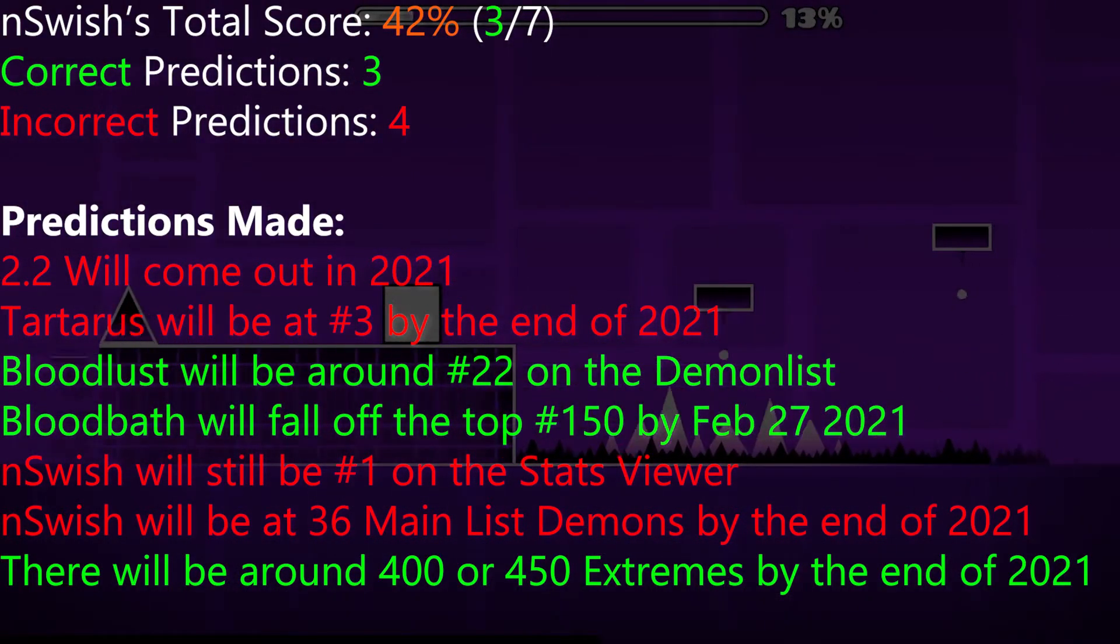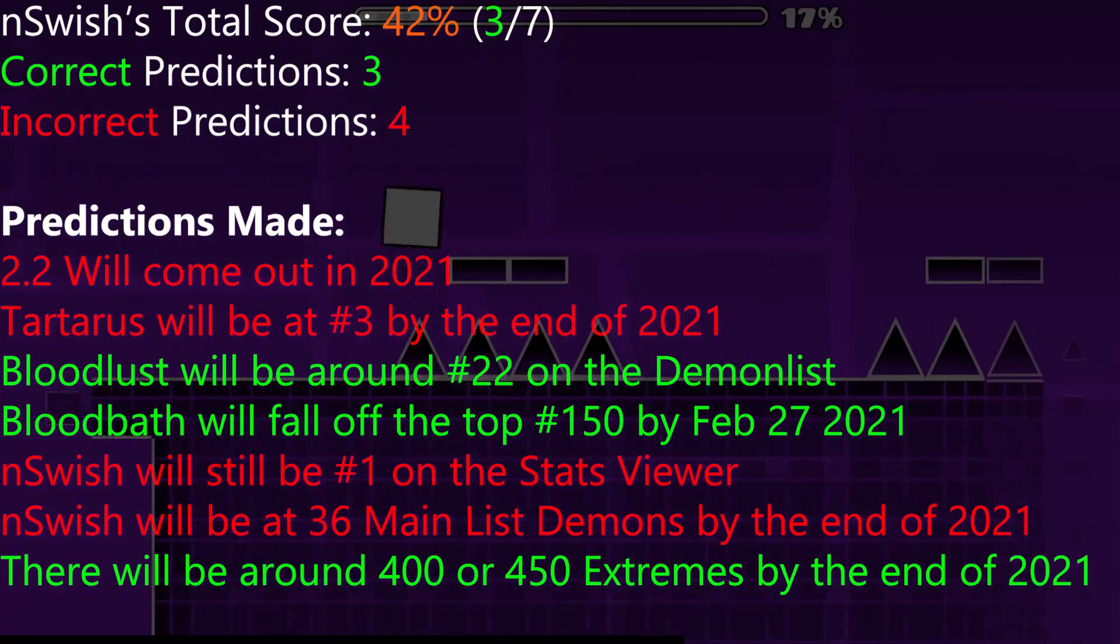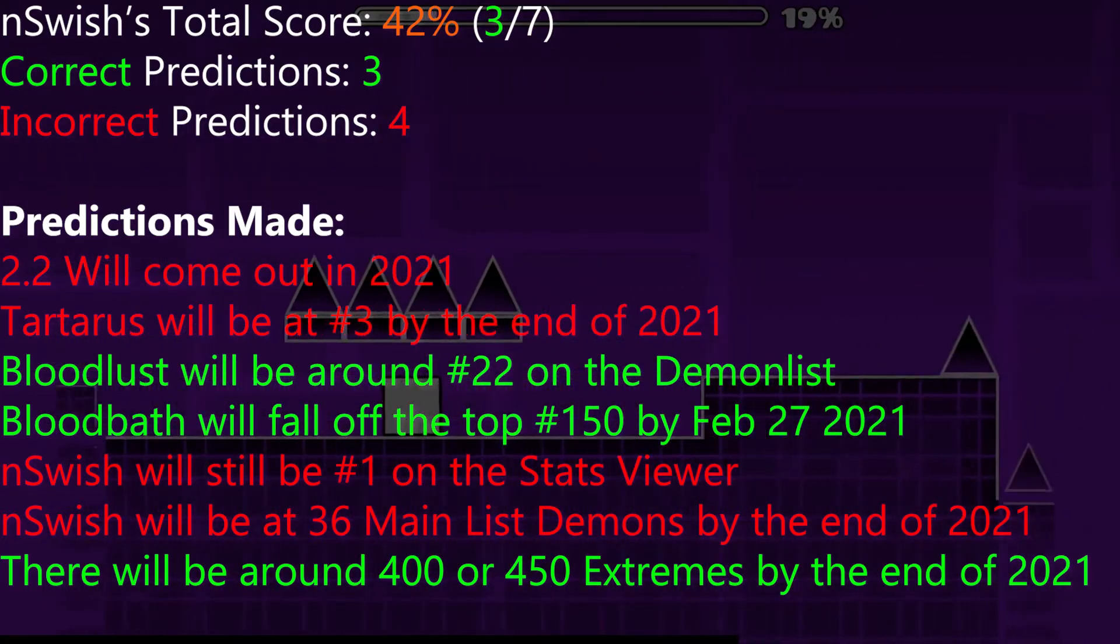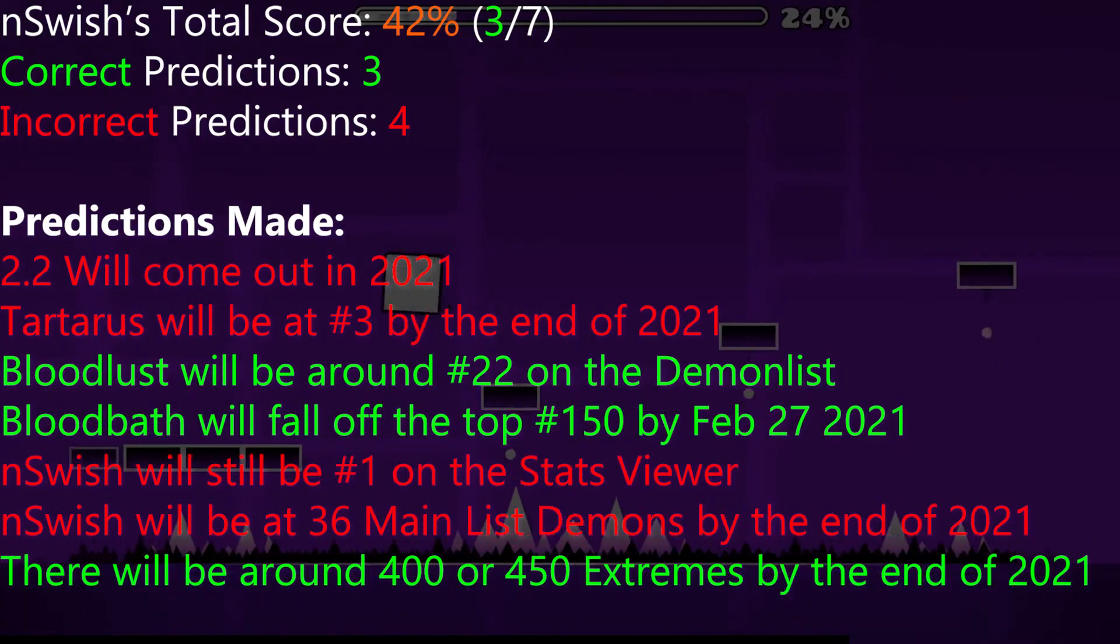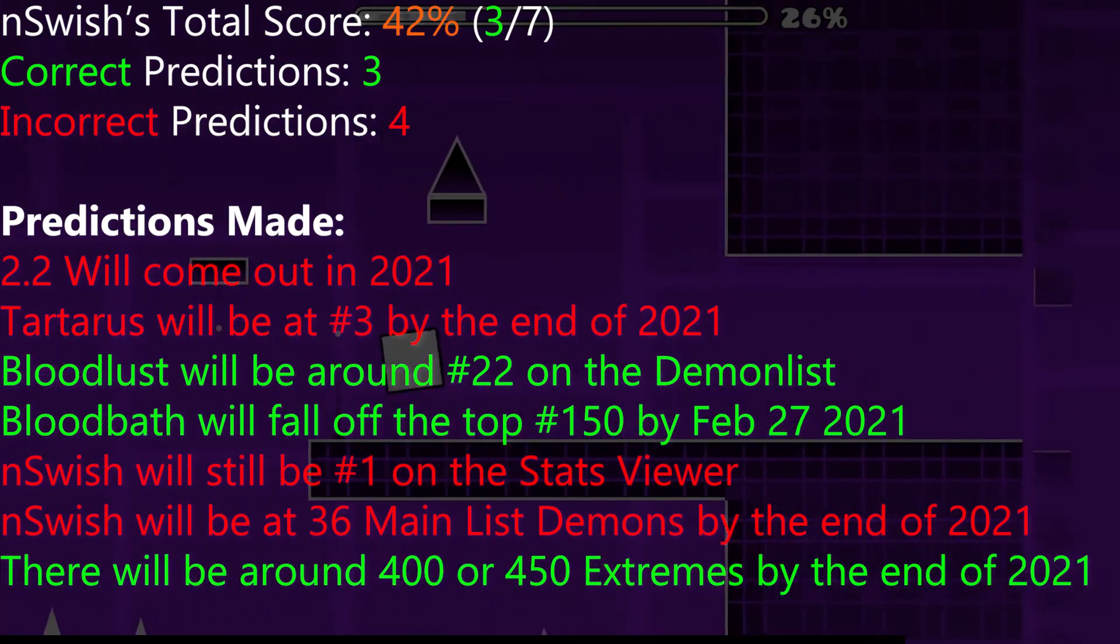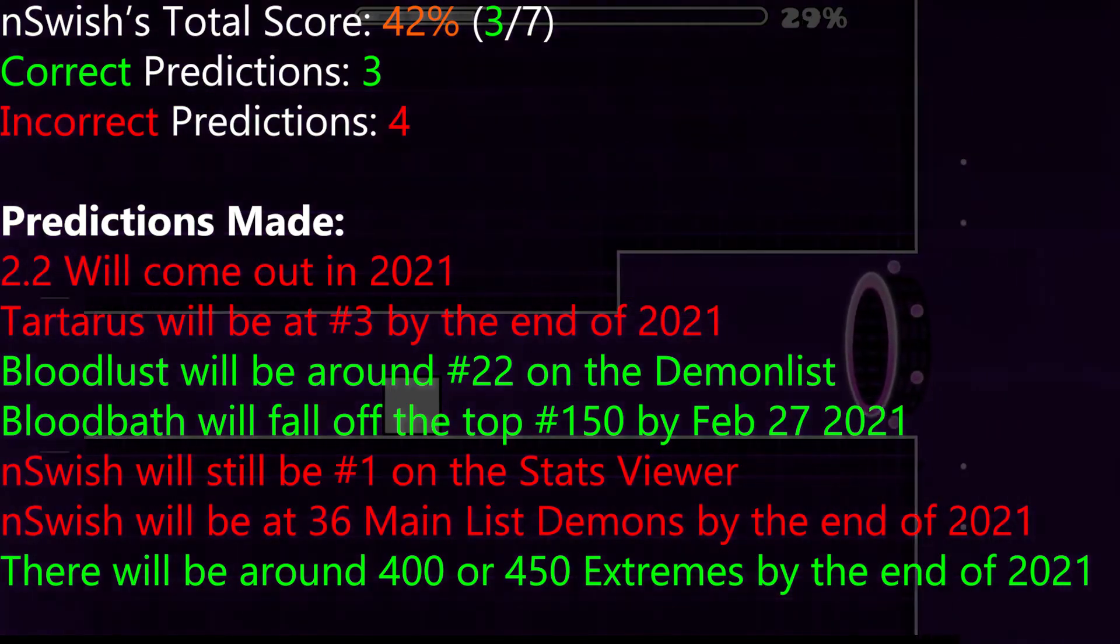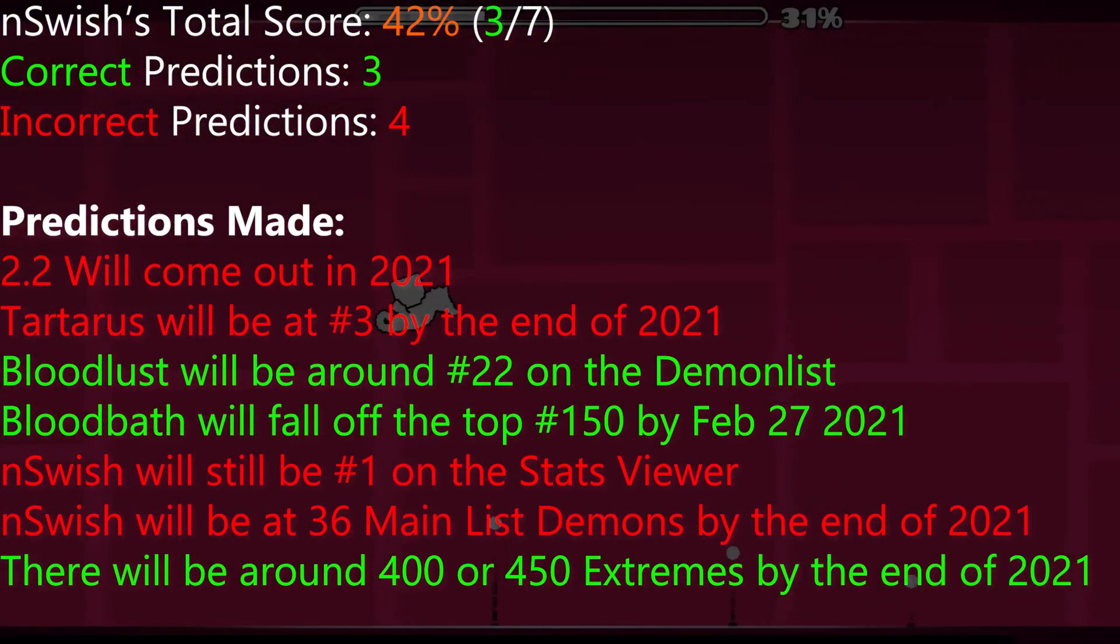Now people have been speculating on when 2.2 is going to come out for almost four years now. Like people thought it would come out in 2017, then 2018, then 2019, then 2020, and of course we didn't get it in any of those years. So it's been almost four years since the last major update to the game.